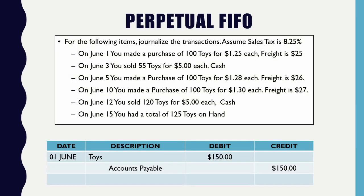Let's dive into our first scenario. On June 1st, you made a purchase of 100 toys for $1.25 each with freight costing $25. When we understand our purchases of inventory, first thing is we need to journalize it. Everything is combined — the purchase price and the freight — giving us a grand total of $150 for our purchases of toys placed on account.